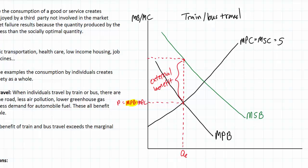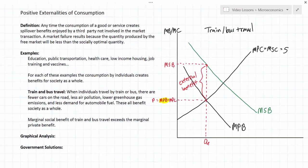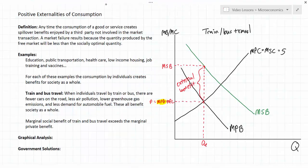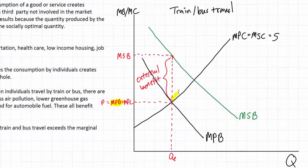Here we see the market failure. At the equilibrium quantity of train and bus travel, the marginal social benefit is greater than the marginal private benefit. There is a potential welfare gain represented by a triangle, which is the increase in total welfare if more people traveled by train and bus. In some graphs this would be called deadweight loss, but here we call it the potential welfare gain.